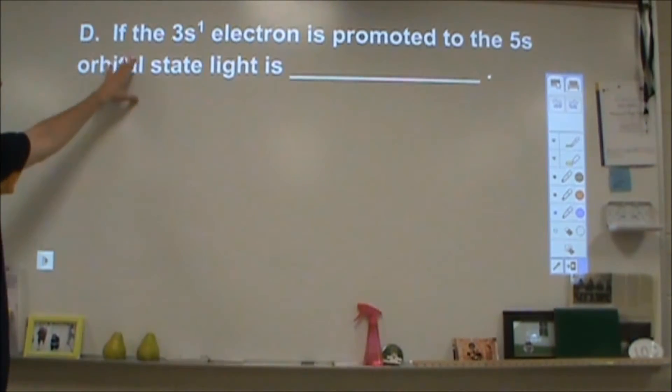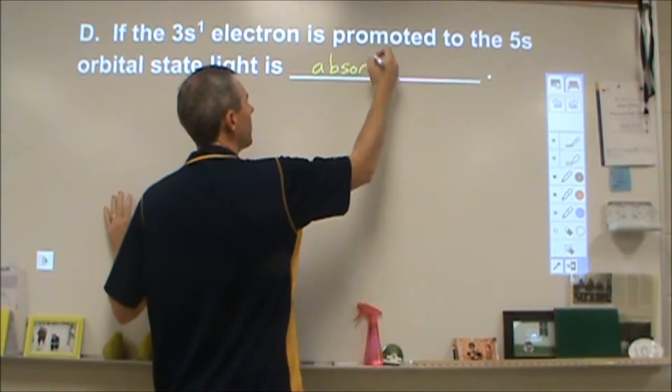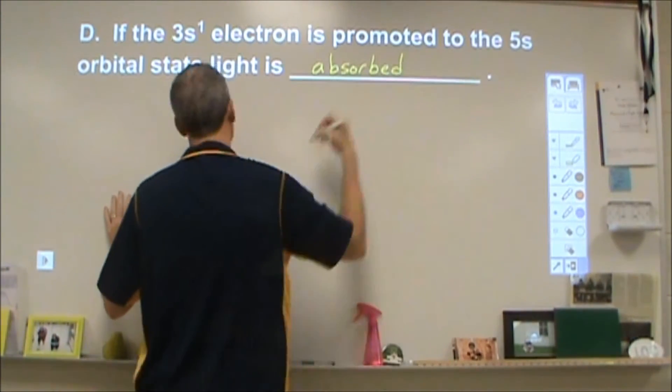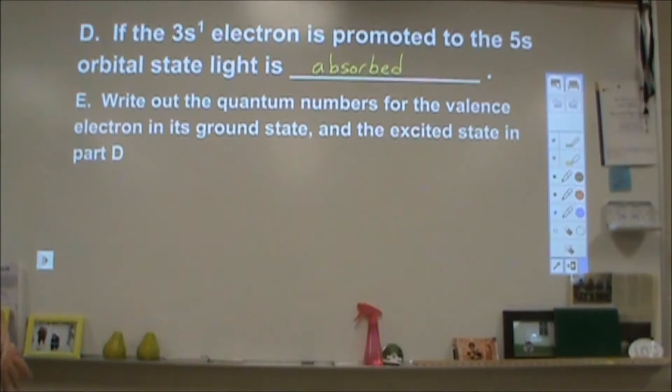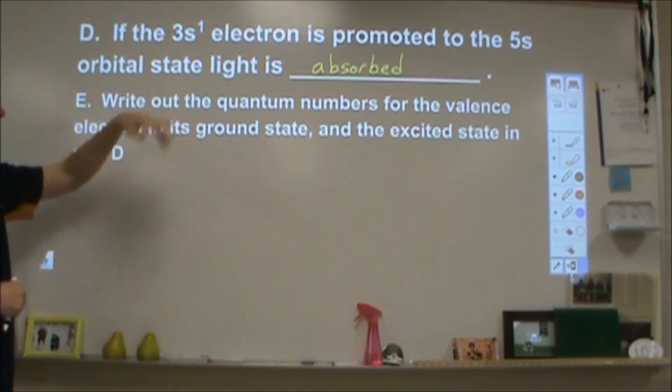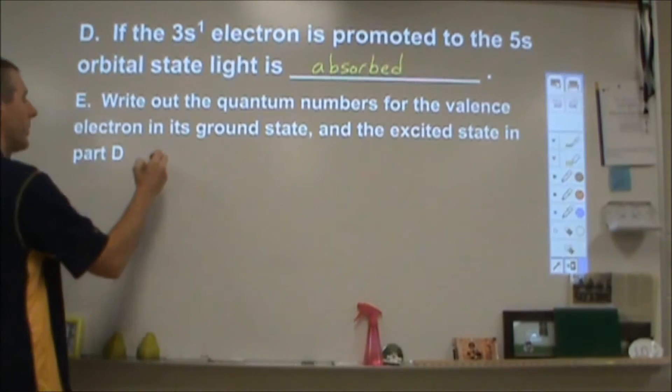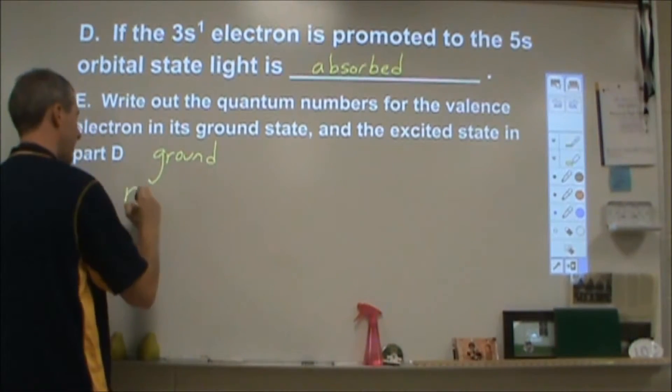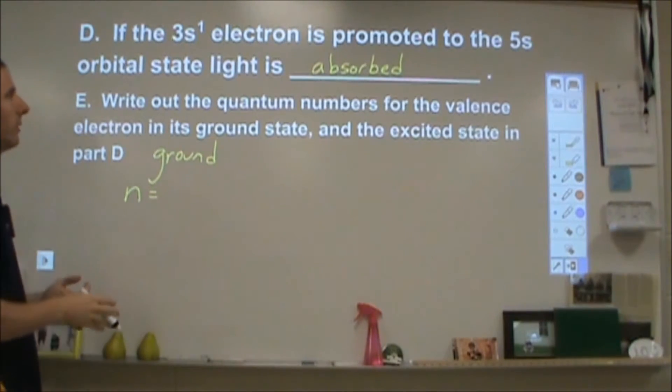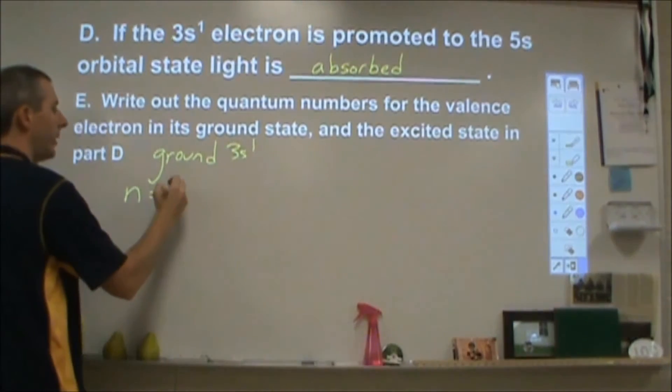Okay, if the 3s1 electron is promoted to the 5s orbital state, light would be absorbed. And write out the quantum numbers for the valence electron in its ground state and the excited state from part D, 5s. So in the ground state, we have our four quantum numbers. We have the principal quantum number, which is what energy level. So for a 3s1 electron, our n would be 3.